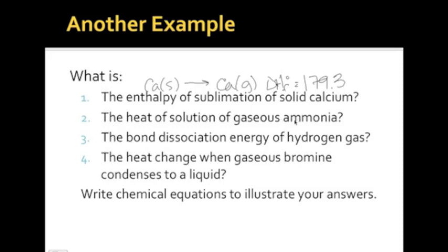The heat of solution of gaseous ammonia. You get NH3, and this is gas, going to NH3 aqueous. And again, looking that up in the back of the book, you get negative 80.29 minus the reactant, which is negative 46.19.